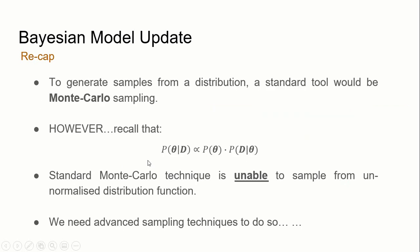To generate samples from a distribution, the standard tool would be Monte Carlo sampling. However, because the posterior is usually unnormalized, standard Monte Carlo techniques would not be able to do the job, and thus this brings the need to use advanced sampling techniques.